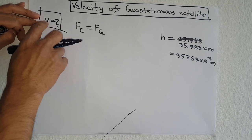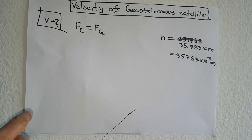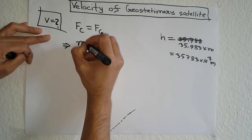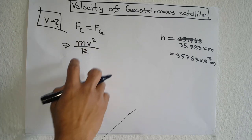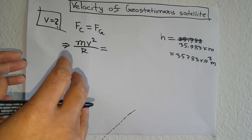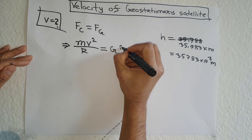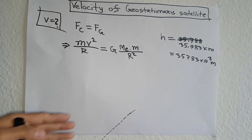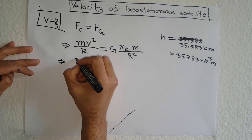In this episode I will calculate the constant velocity of the geostationary satellite. The centrifugal force is equal to mv² over r, where m is the mass of the satellite, v is the orbital velocity, and r is the distance from the center of the Earth to the satellite. The gravitational force, from Newton's law of gravitation, equals G times the mass of the Earth times the mass of the satellite, over r squared.